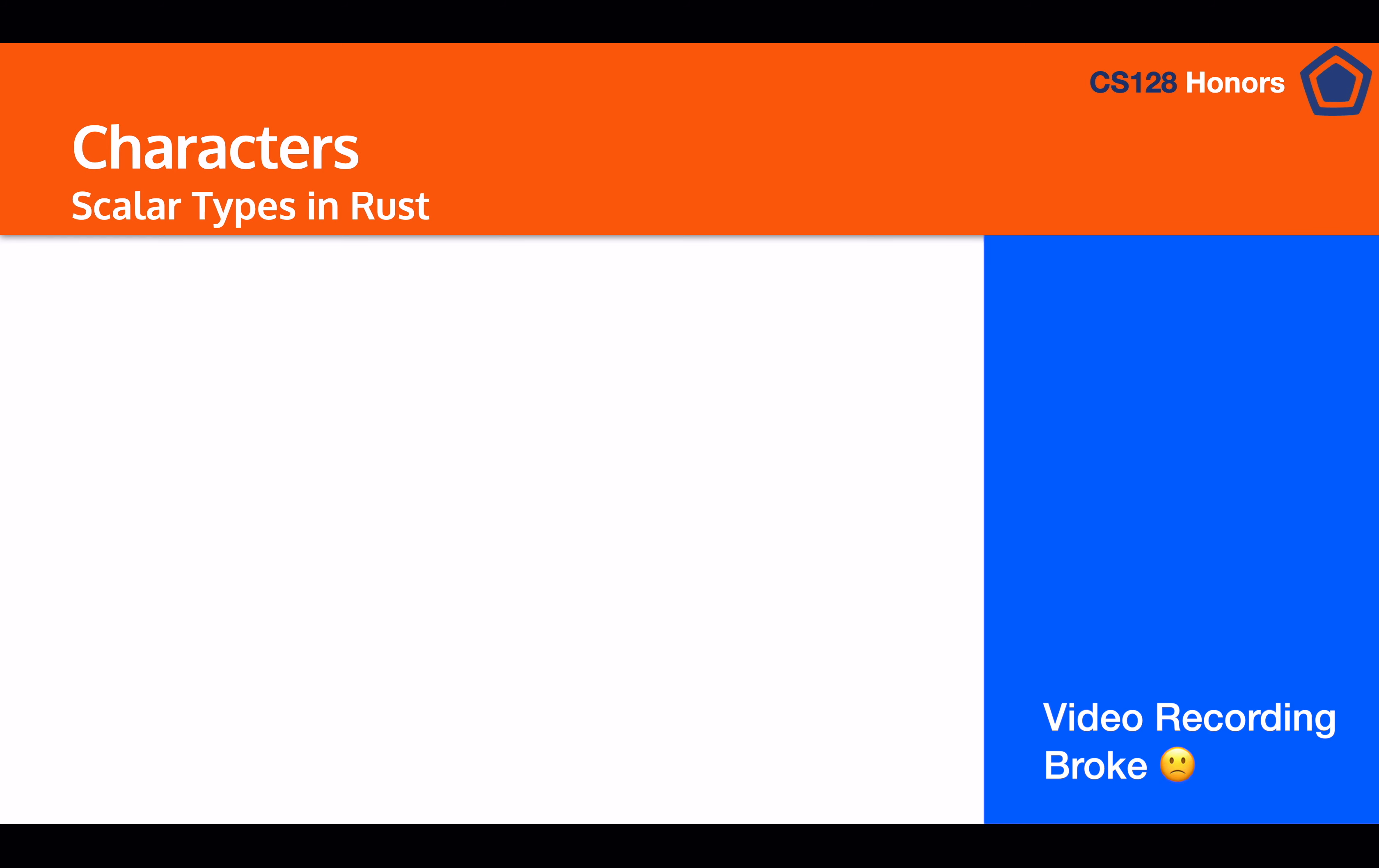So the next type that we're going to talk about are characters. And characters are used to store letters and are the underlying basis that strings are built upon in Rust, just like in any other language. Now, importantly, in Rust, characters are actually four times the size as they would be in C++, at four bytes large versus one byte in C++. But we'll get to why that is in a moment.